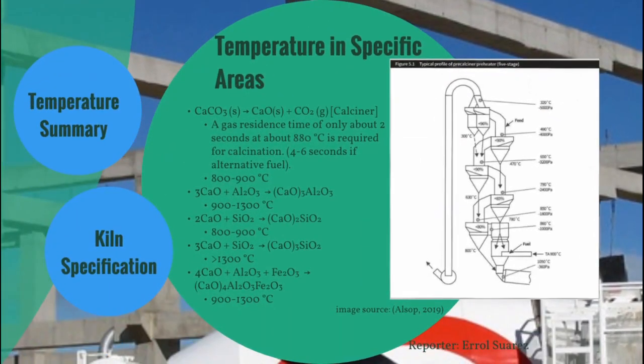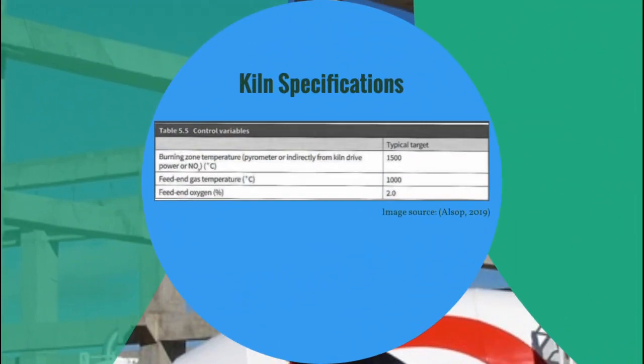In recap, calcination and the production of alite and tetracalcium aluminoferrite proceed at 900 to 1300 degrees Celsius. The production of tricalcium aluminate proceeds above 1300 degrees Celsius. The different stages of the preheater have different temperatures and pressures; gases entering are at 1000 degrees Celsius, so temperatures range from 300 to 1000 degrees Celsius and pressures from 360 to 5000 Pa. The calciner is maintained at about 900 degrees Celsius. Since the heat in the kiln is uneven, the temperature near the burning zone is maintained at 1500 degrees Celsius, while the temperature near the end where gases are recycled is maintained at 1000 degrees Celsius.